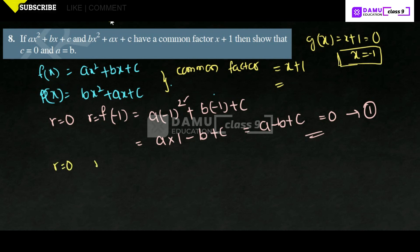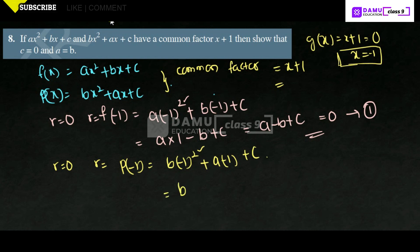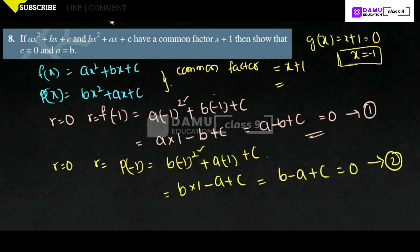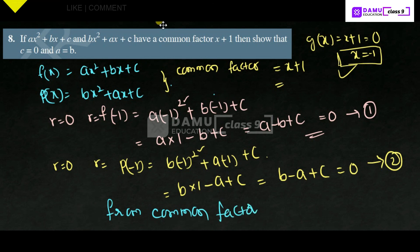For p(x) the remainder is also 0 since x + 1 is a factor. So p(-1) = b(-1)² + a(-1) + c = b - a + c = 0. Because if x + 1 is a factor, the remainder should be equal to 0 in both conditions. Therefore f(-1) = p(-1) = 0, meaning both equations equal 0.